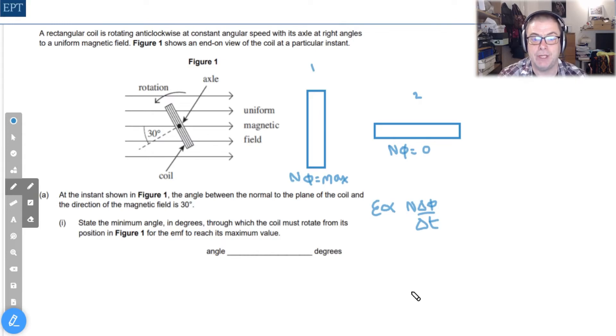This means that we need to turn our coil into a horizontal position which means that the angle we need to turn is 60 degrees.